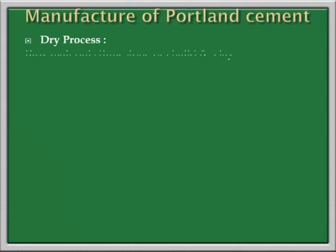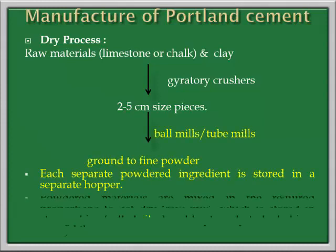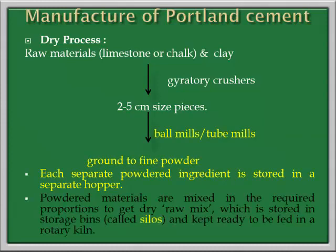In the manufacture of Portland cement the next step is the dry process. In the dry process, limestone and clay are subjected to gyratory crushers to obtain two to five centimeter size pieces. Then they are subjected to ball mills or tube mills to get a fine powder. Each separate powdered ingredient is stored in a separate hopper. Powdered materials are mixed in required proportions to get dry raw mix, which is stored in storage bins called silos, and kept ready to feed to a rotary kiln.